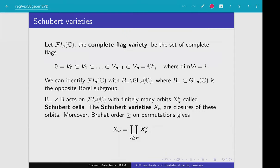To start, we're going to start with just the complete flag variety. Those are all of the complete flags from 0 to Cn — the flags where for your chain of subspaces at every step you want to increase your vector space dimension by one every time.